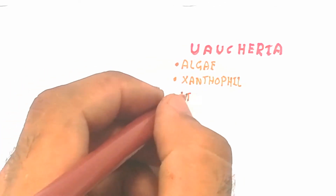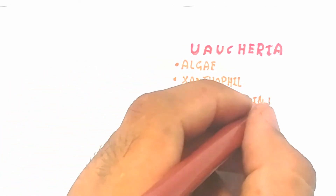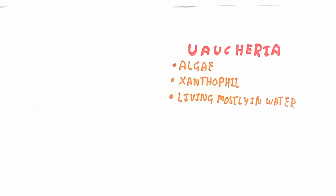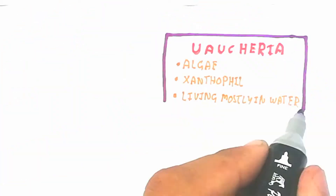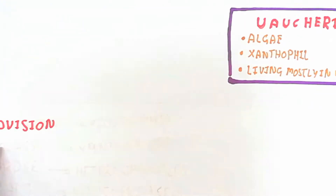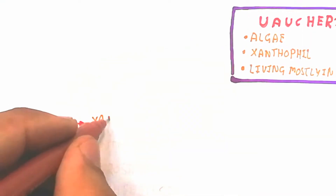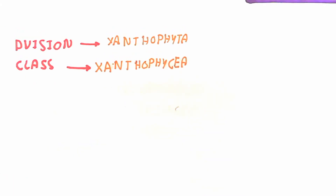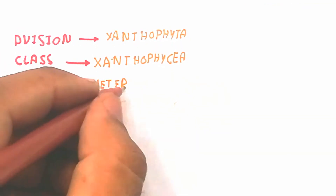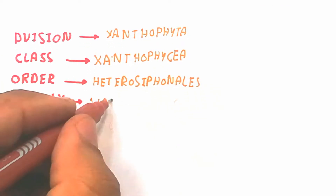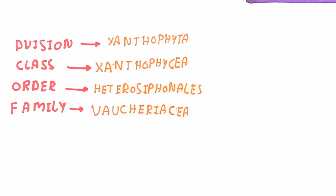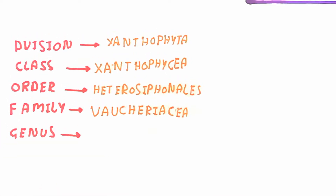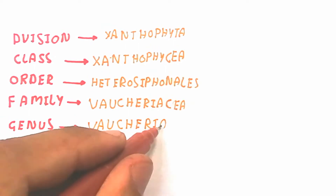The xanthophyll pigment is present in the algae, and is known as xanthophyll. We will discuss xanthophyta in another video. Here, regarding Vaucheria: the division is Xanthophyta, class is Xanthophyceae, and the order is Heterosiphonales — meaning the siphons are not similar to each other. The family is Vaucheriaceae and the genus is Vaucheria.